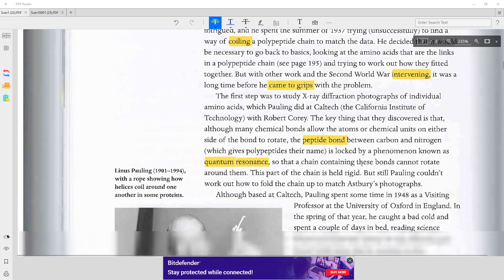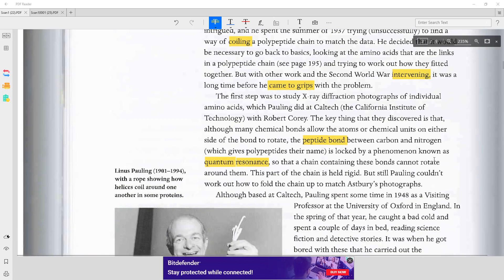The first step was to study x-ray diffraction photographs of individual amino acids, which Pauling did at Caltech, the California Institute of Technology, with Robert Corey.